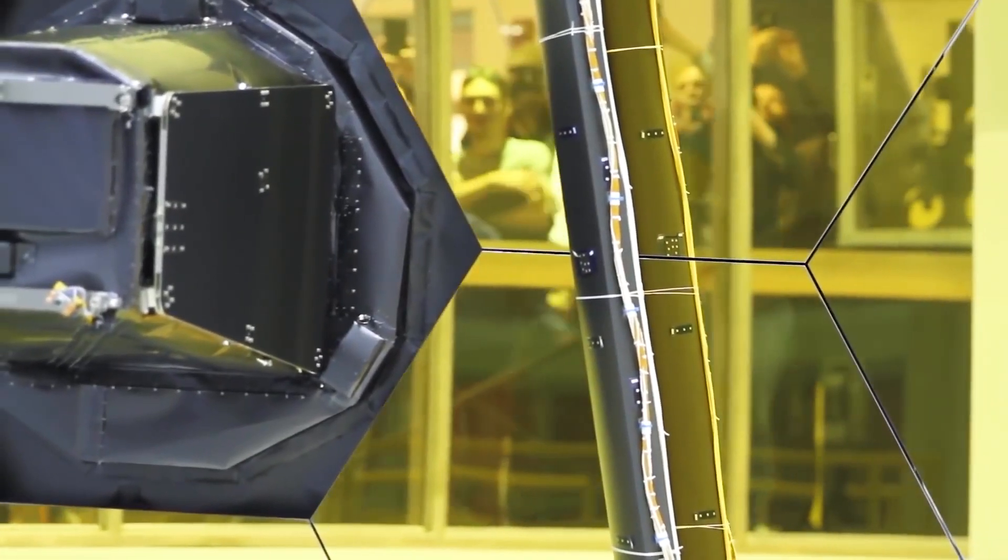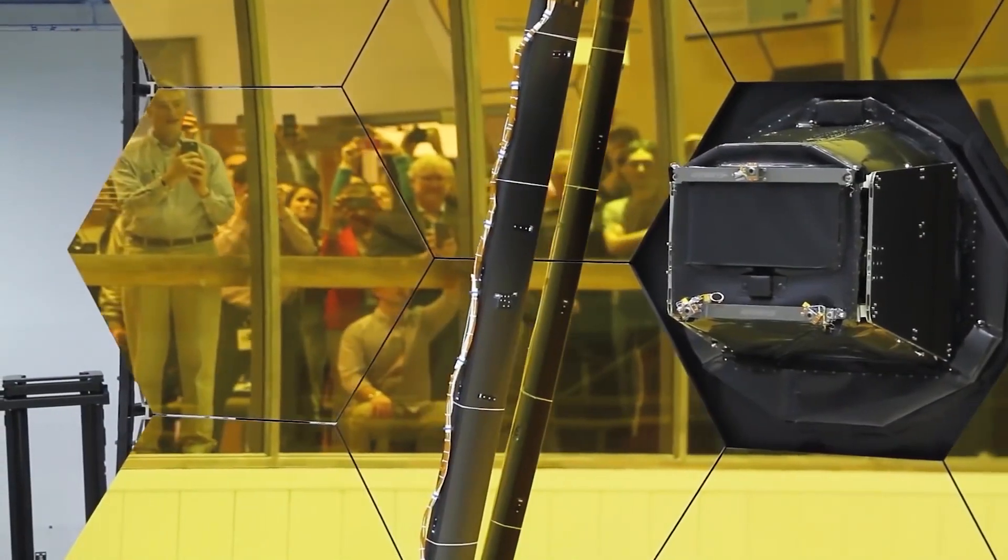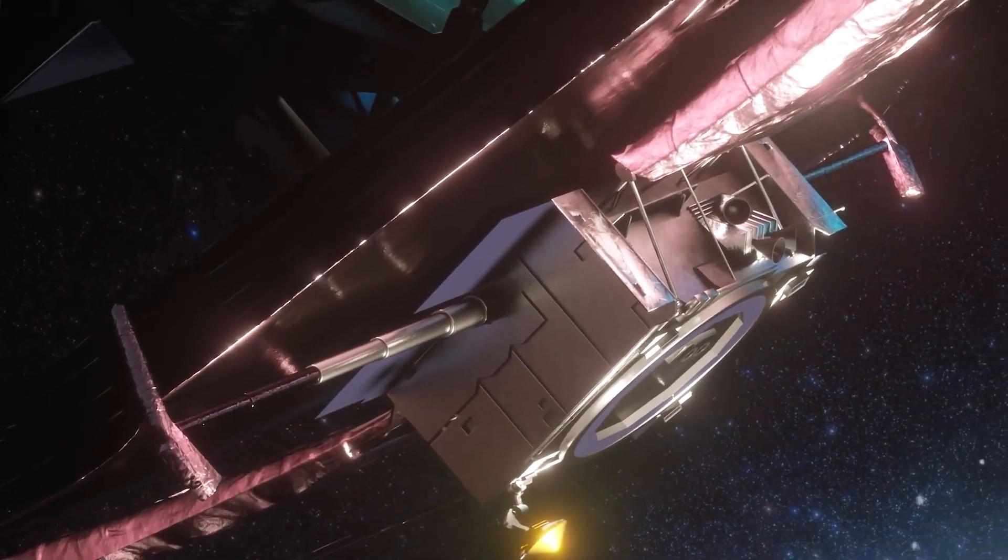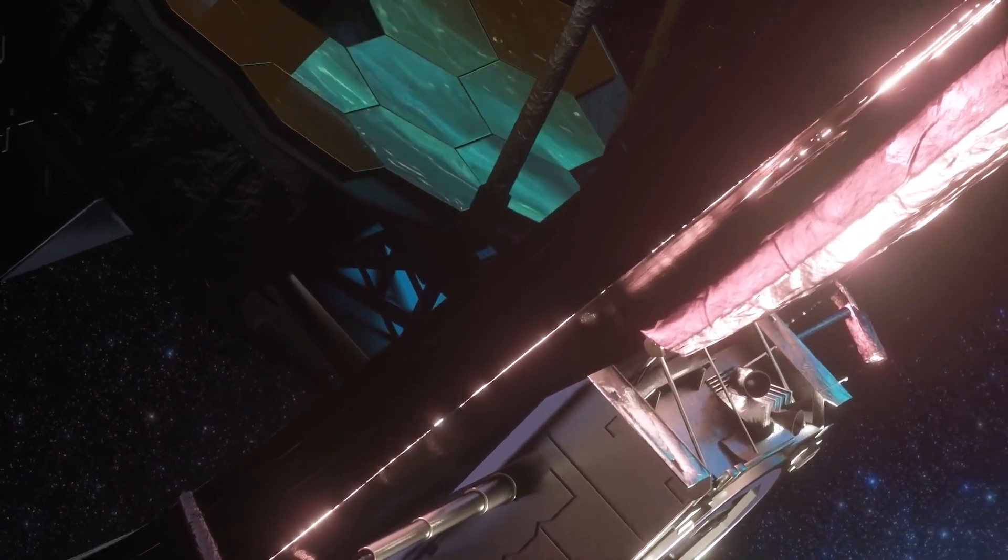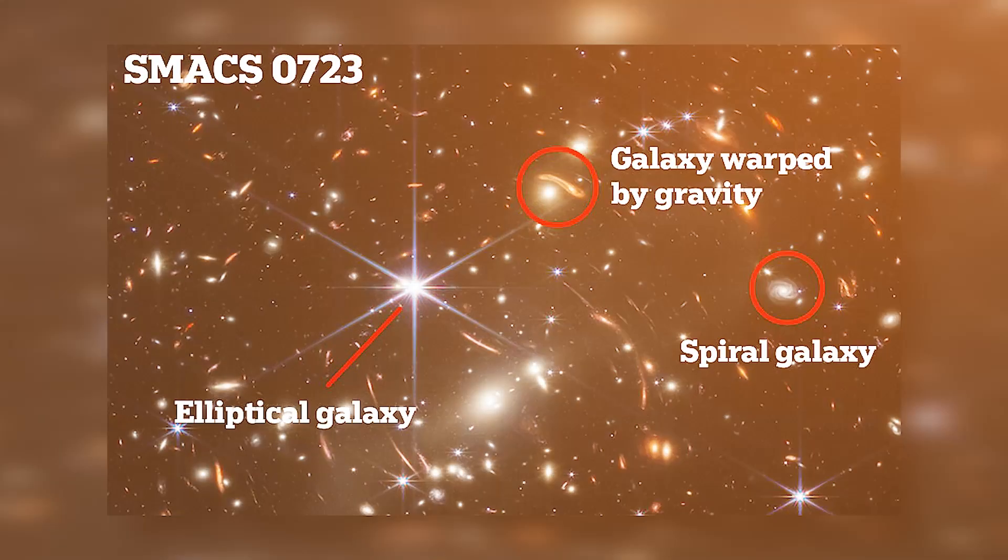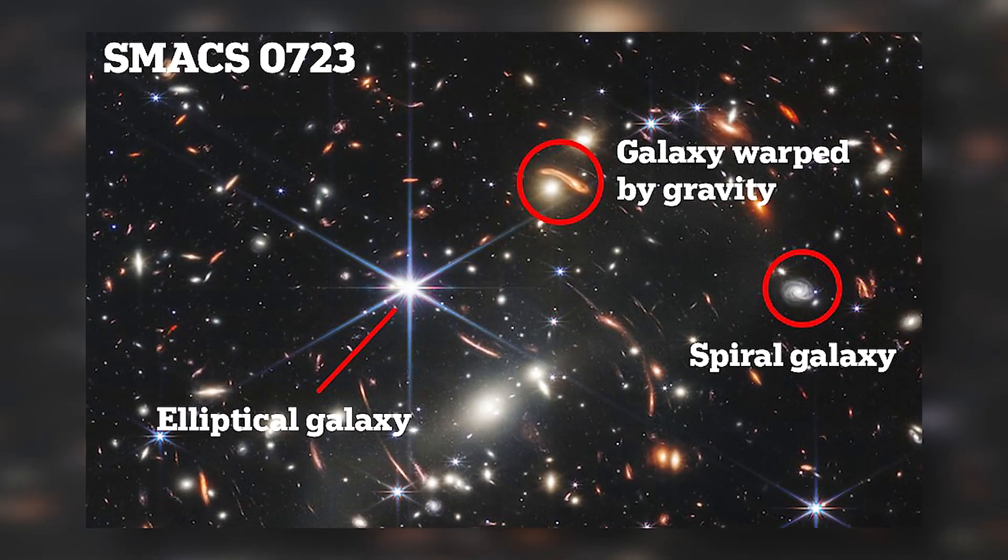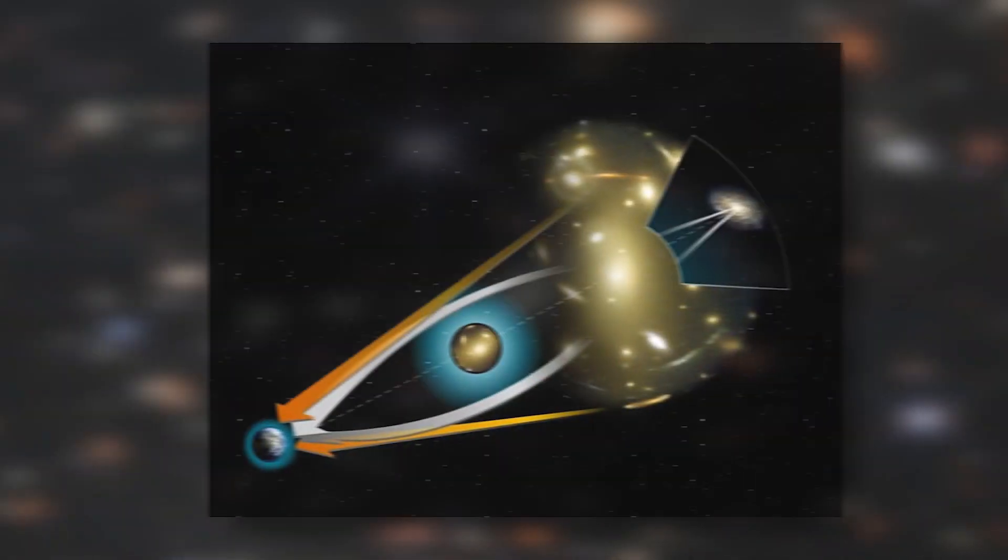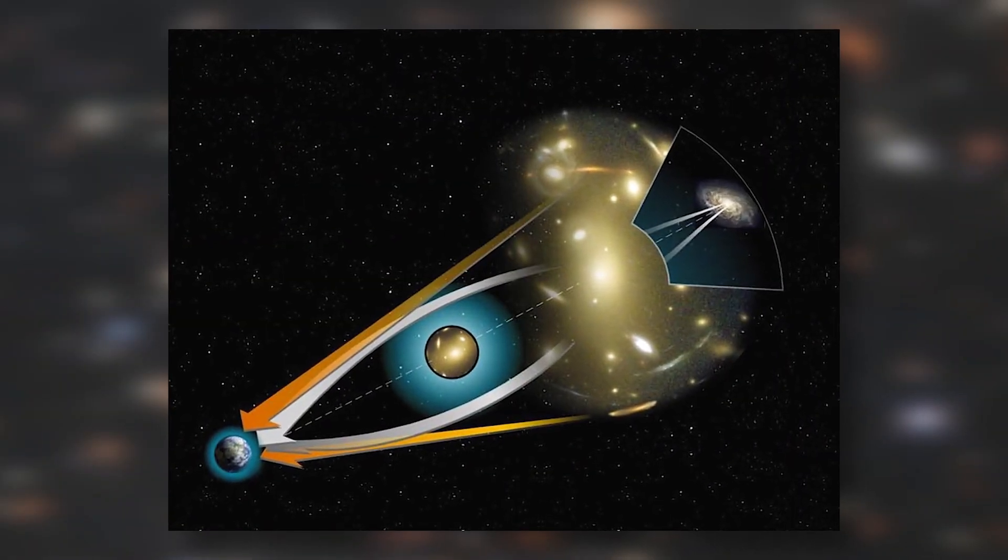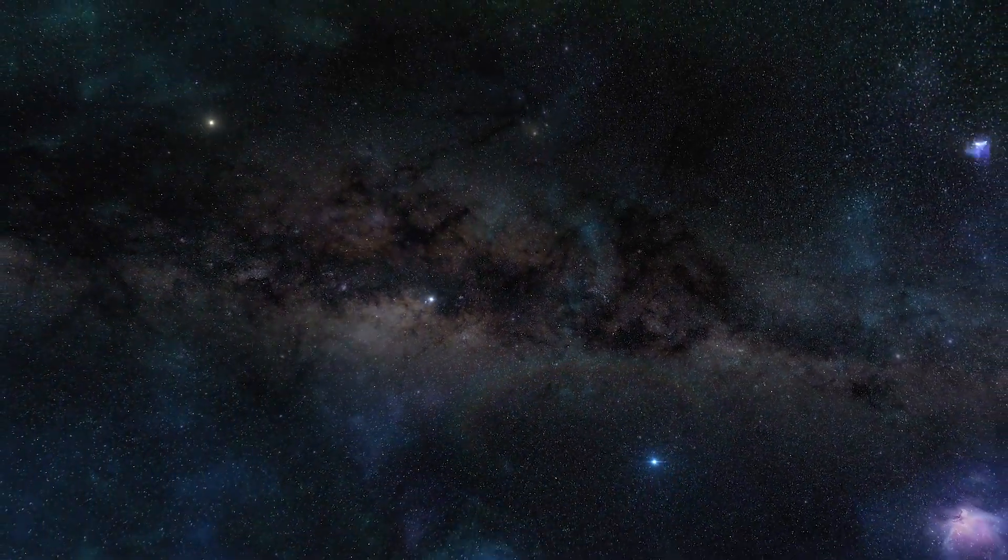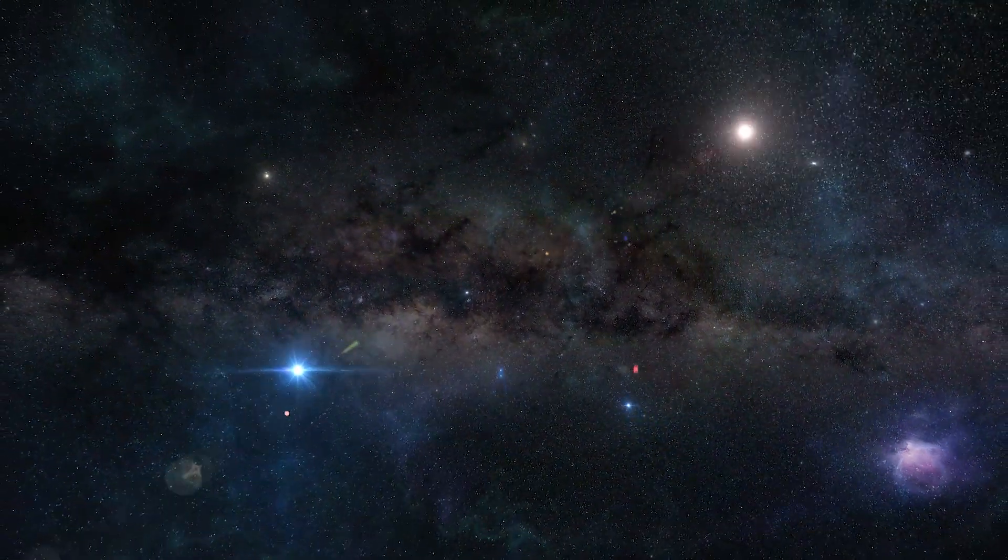The JWST aimed its powerful infrared camera onto SMACS-0723, a massive cluster of galaxies that acts as a magnifying glass for the objects it observes. The light streaks are galaxies stretched out by the massive gravitational pull of SMACS-0723, a phenomenon known as gravitational lensing. As a result, the telescope provided the first deep-field image of ancient, distant, and dim galaxies.